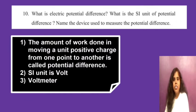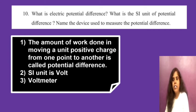Question 10: what is electric potential difference, its SI unit, and the device used to measure it? The definition is: the amount of work done in moving a unit positive charge from one point to another. The SI unit is volt, and the device used to measure it is a voltmeter. Each part carries one mark.